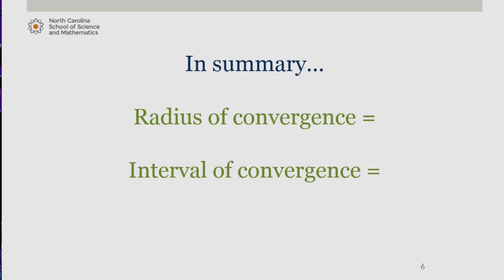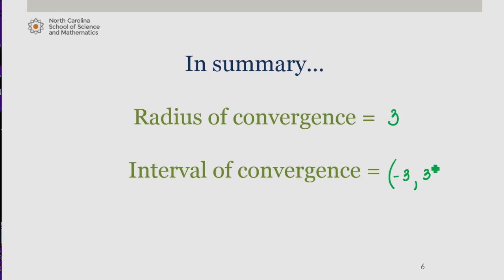So, in summary, our radius of convergence is 3, and our interval of convergence is negative 3 to 3, not including the endpoints.